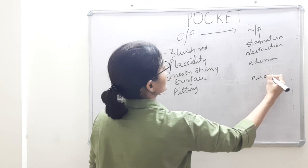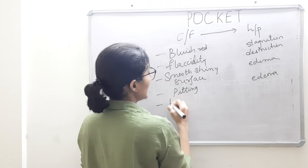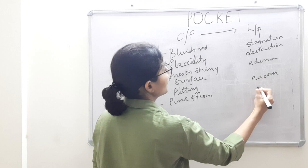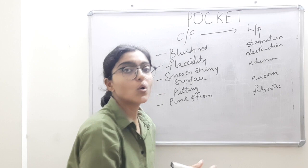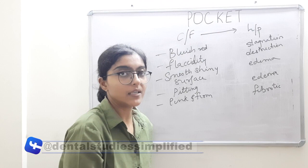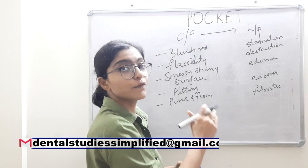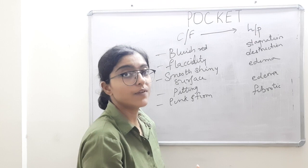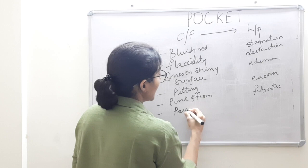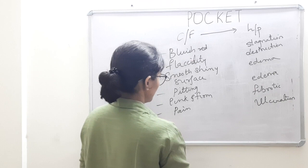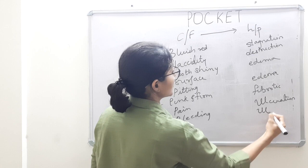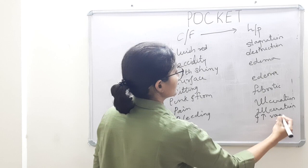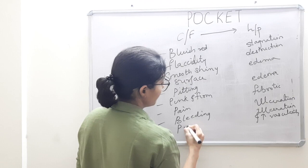Less frequently, the tissue is pink and firm. This is when fibrotic tissue changes are predominant over edematous changes. If fibrotic overrides edematous, the tissue becomes pink and firm — but this is disguising because it looks normal while the underlying tissues are highly inflamed and ulcerated. So we have pain because of ulceration, bleeding due to ulceration and increased vascularity, and sometimes pus due to suppurative changes.